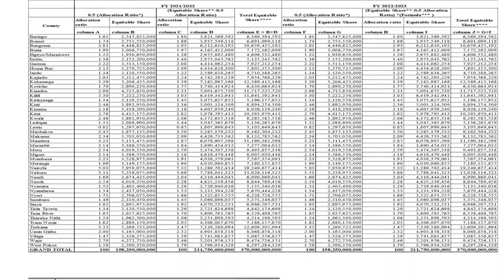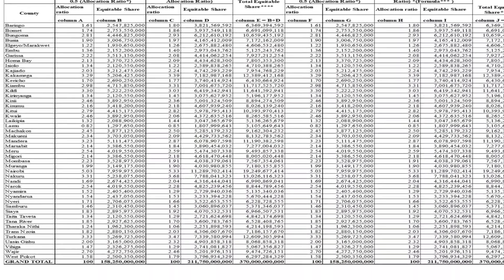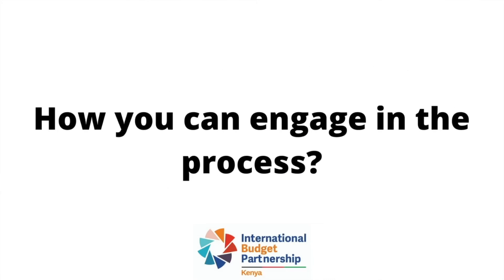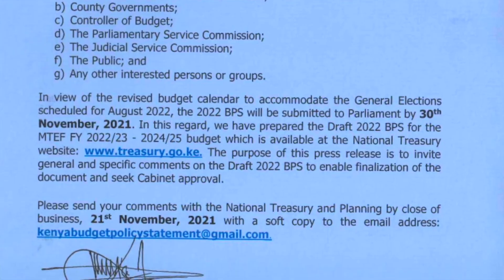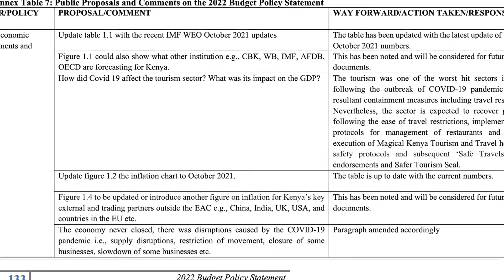Further, it indicates the amount that will go through the equitable share and the amount that will be given as conditional grants. The PFM Act requires that the public are involved in this process. In practice, the National Treasury puts out the document for the public to give input, usually with a very limited window for this feedback. Despite the short timeframe, it is important for citizens to engage in the process.